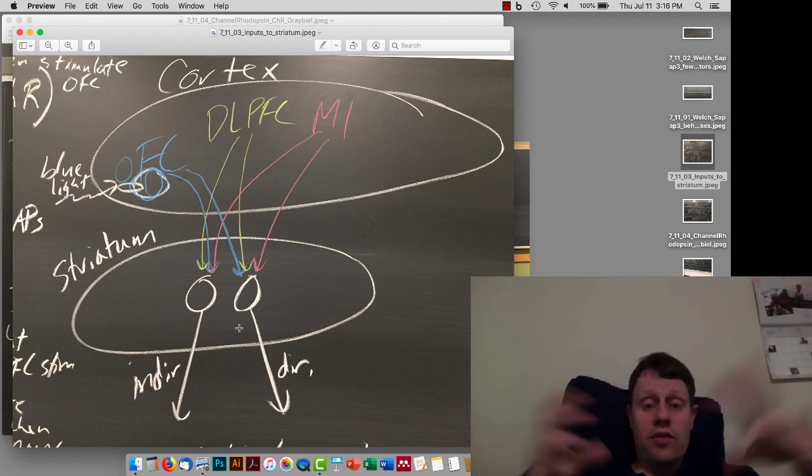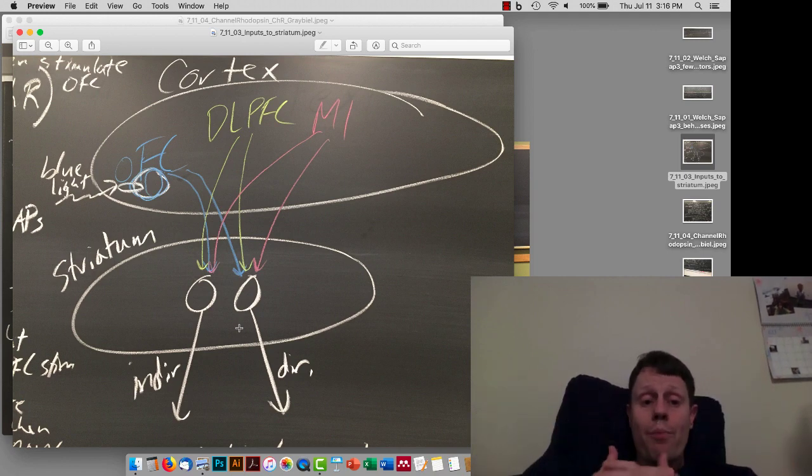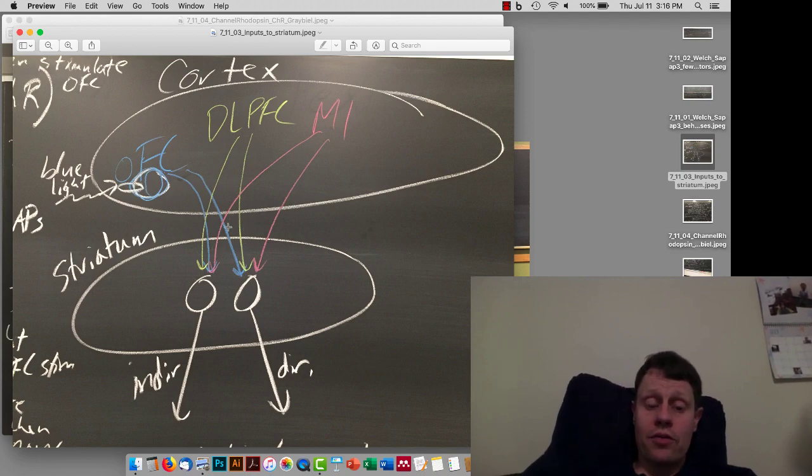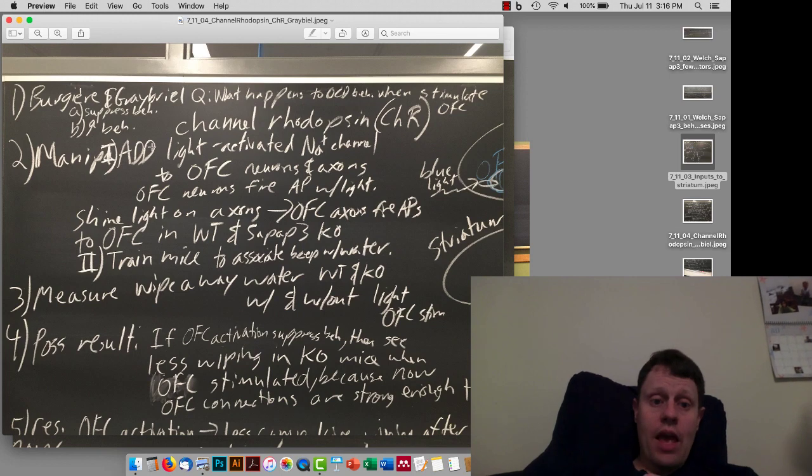In order to do that, electrical stimulation doesn't work because all of these axons jumble together. But, if we genetically alter the orbital frontal cortex neurons only to express a protein that gets activated by light, then the consequence is that when we shine light on those cells, they start firing action potentials. And if we shine light on this bundle of axons, only the axons that came from the orbital frontal cortex have this light-activated sodium channel on them.